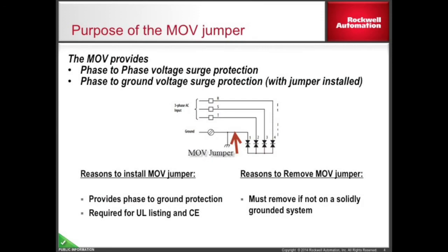On all PowerFlex 7-class drives with three phase AC inputs, a MOV is provided to protect the drive from voltage transients. With the PE-A power jumper installed, this device provides phase-to-phase and phase-to-ground voltage surge protection up to 6000 volts.